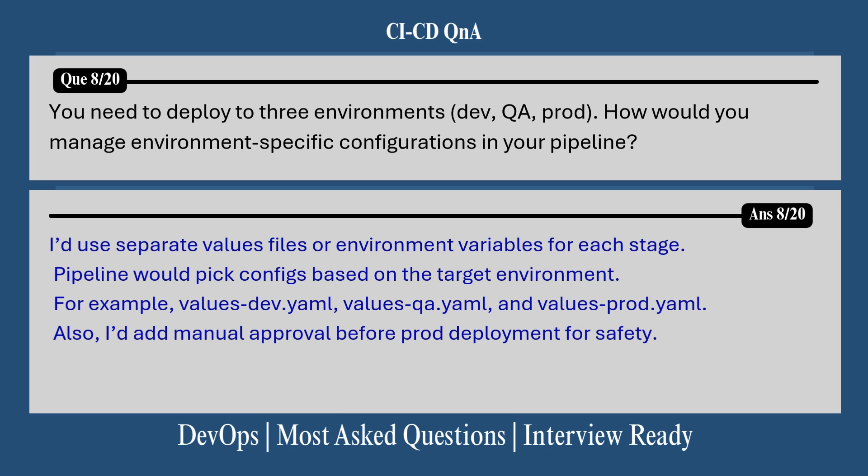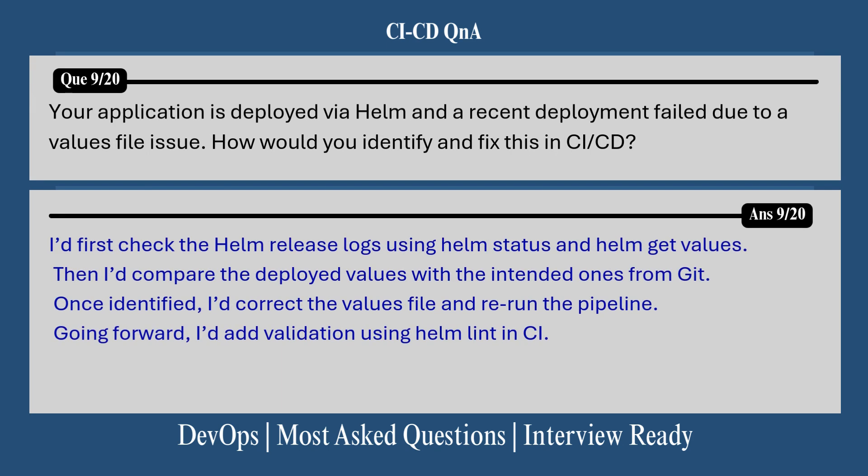Question 8: You need to deploy changes to three environments — dev, QA, and prod — how would you manage environment-specific configurations in your pipeline? I would use separate values files or environment variables for each stage. The pipeline would pick the config based on the target environment — for example, values-dev.yaml, values-qa.yaml, values-prod.yaml. I would also add a manual approval step before production deployment for safety.